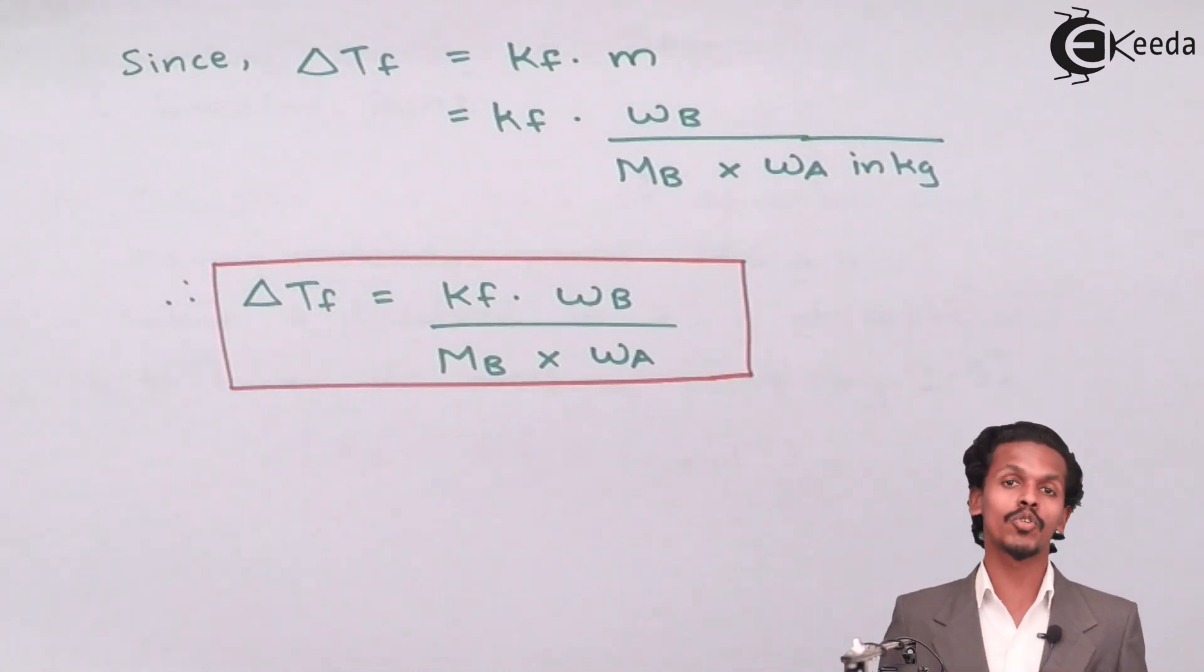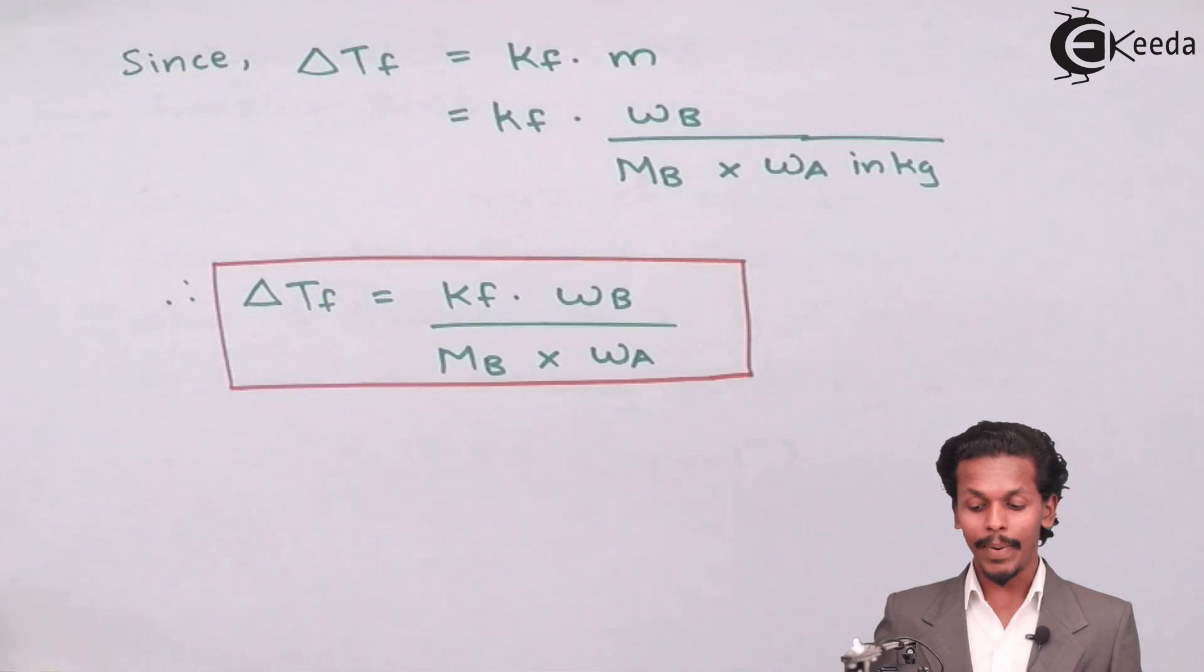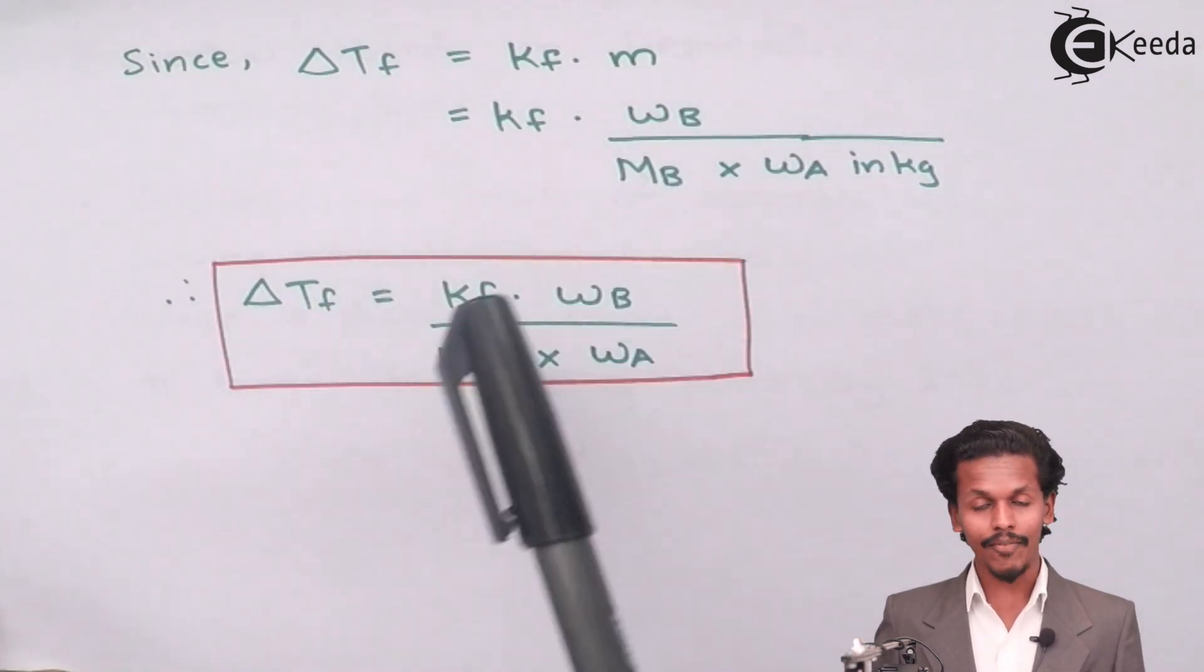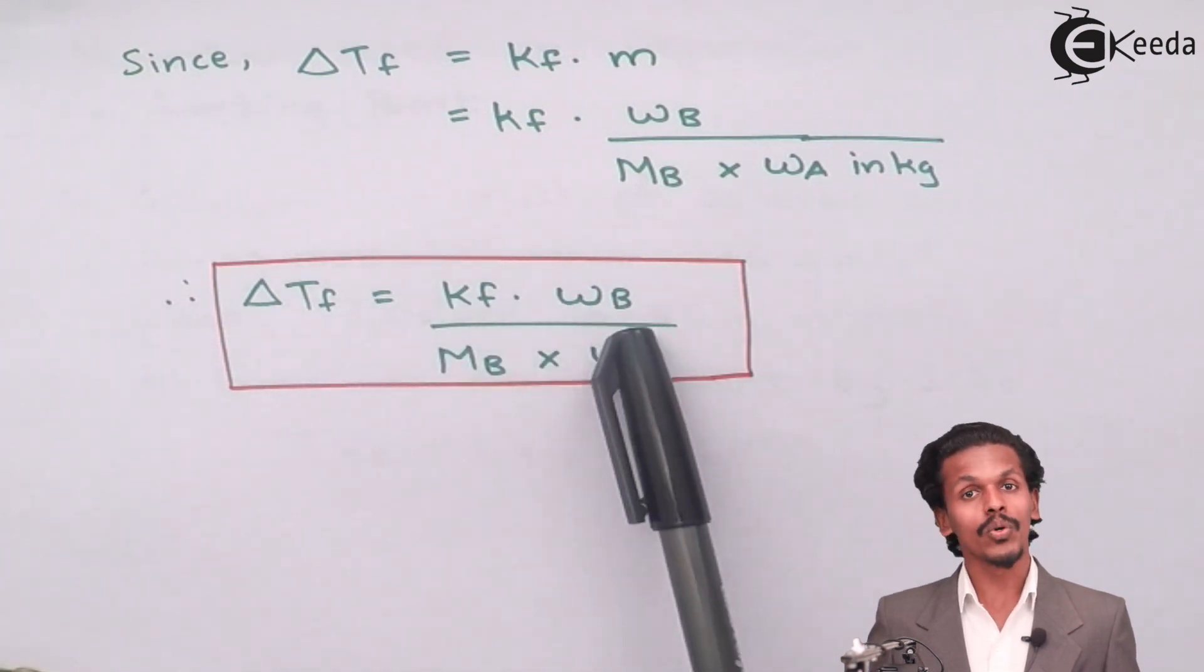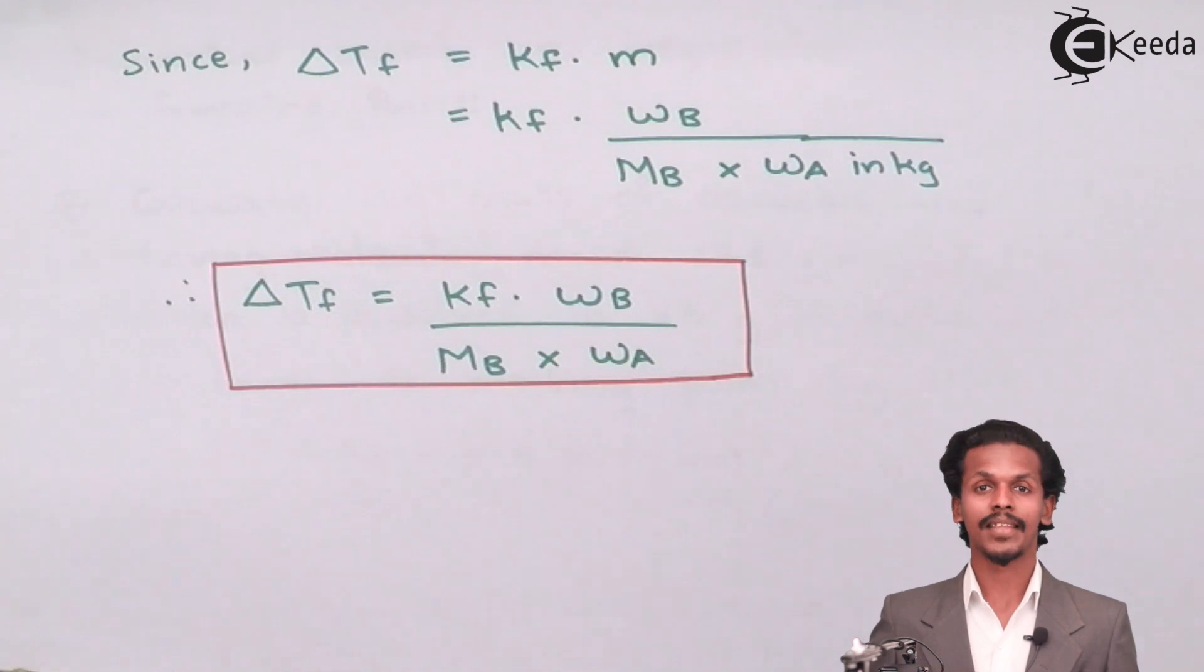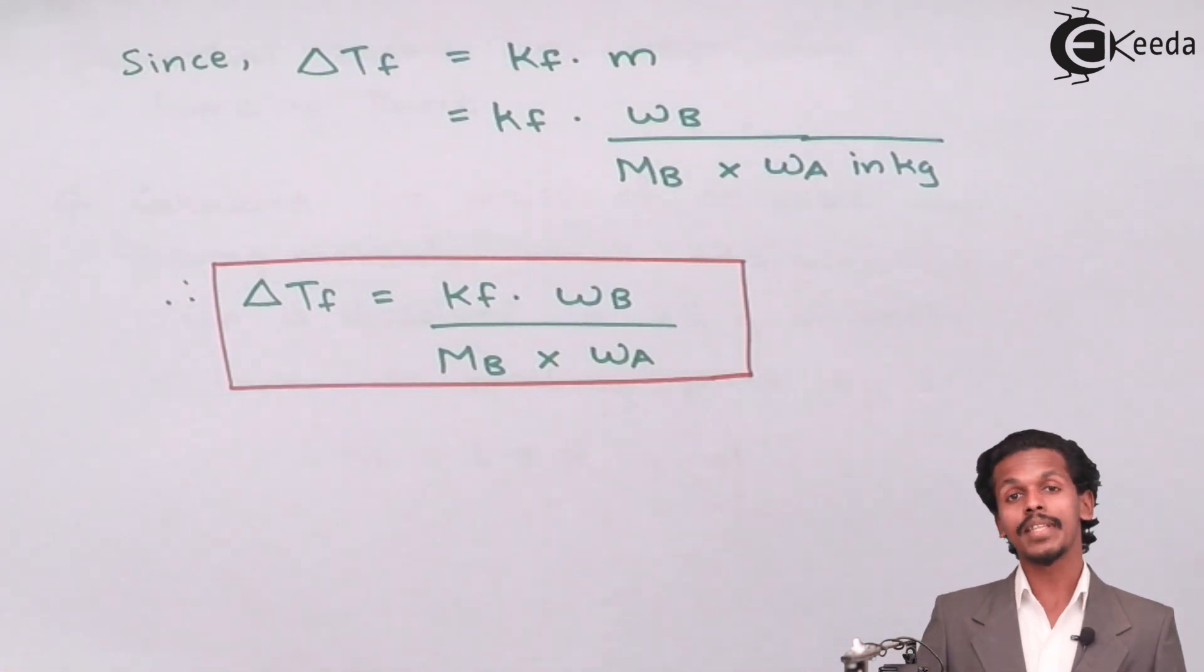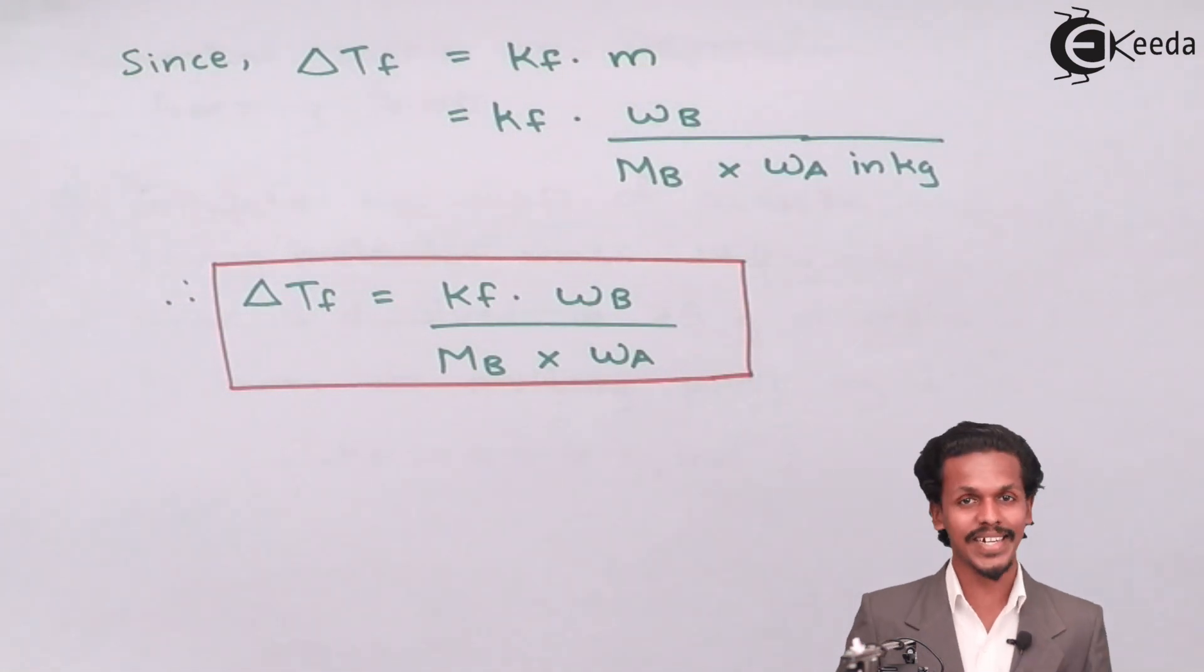And all the terms should be in kg, especially the term Wa should be in kg. And by deriving all this equation, we have got a final equation as delta Tf is equals to Kf into Wb divided by Mb into Wa. And the unit of the elevation in boiling point as well as the depression in freezing point will be Kelvin itself.